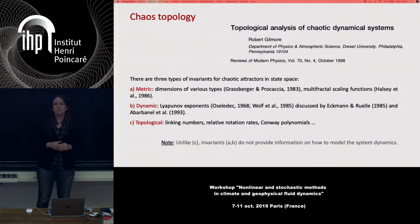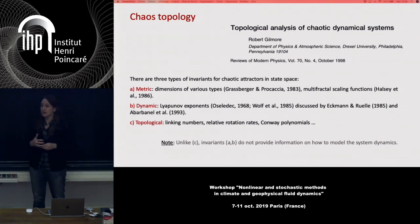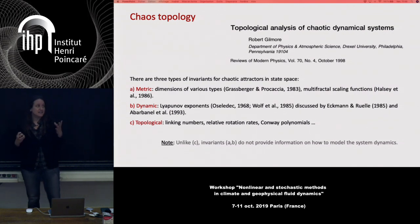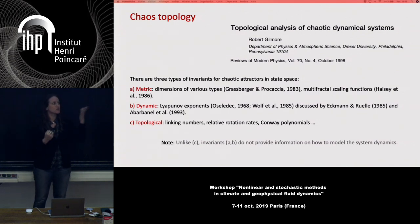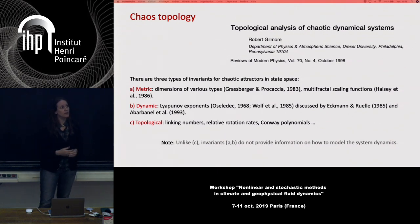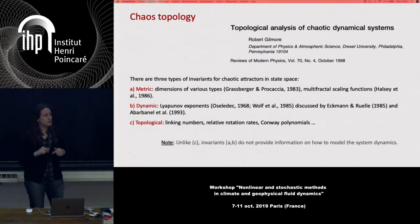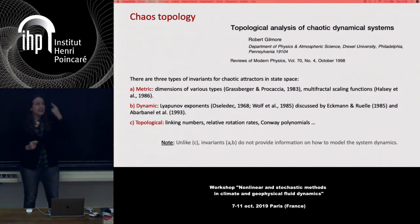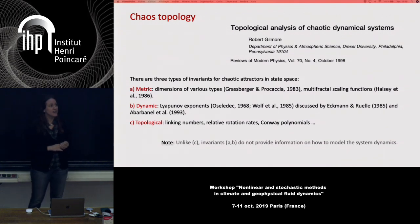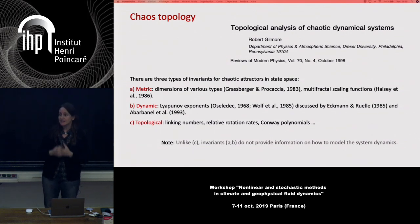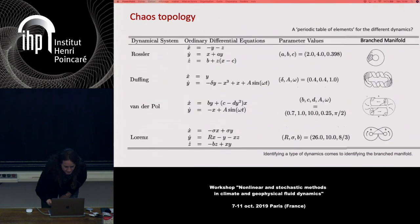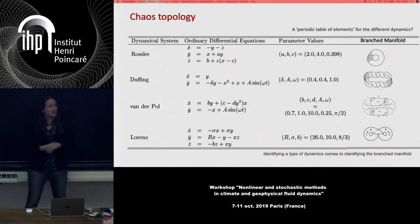Coming back to Gilmore's Review of Modern Physics, he classifies three types of invariants for chaotic attractors in state space: metric invariants such as dimensions and multifractal scaling functions; dynamic invariants such as Lyapunov exponents; and topological invariants. The advantage of topological invariants is that, unlike metric and dynamic ones, they provide information on how to model the dynamics — that's why they are so interesting.